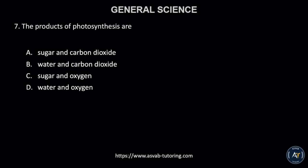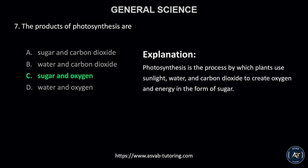Number 7. The products of photosynthesis are: A. sugar and carbon dioxide, B. water and carbon dioxide, C. sugar and oxygen, or D. water and oxygen. The correct answer is letter C, sugar and oxygen. This is because photosynthesis is the process by which plants use sunlight, water, and carbon dioxide to create oxygen and energy in the form of sugar.